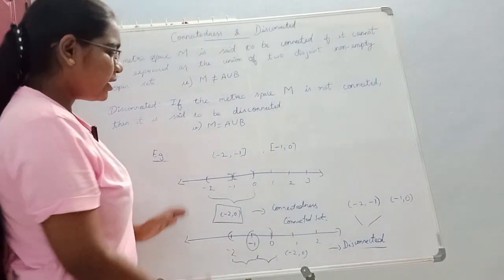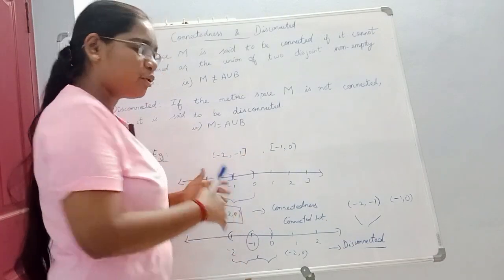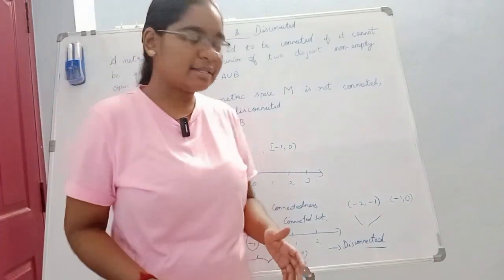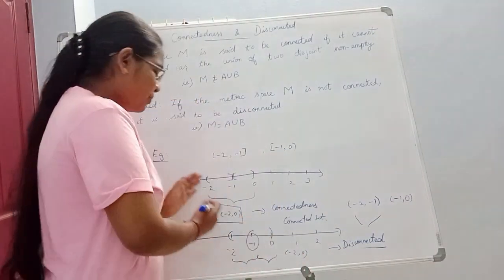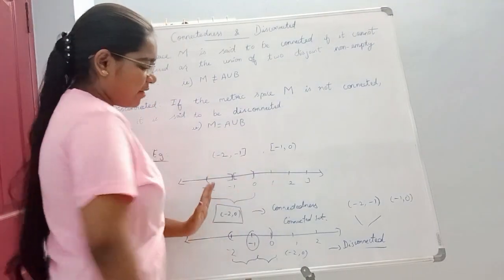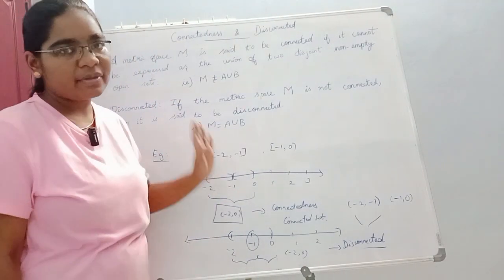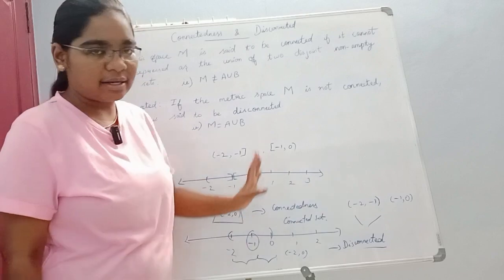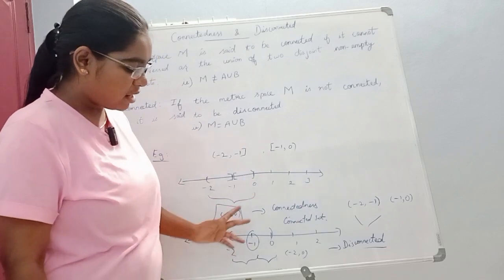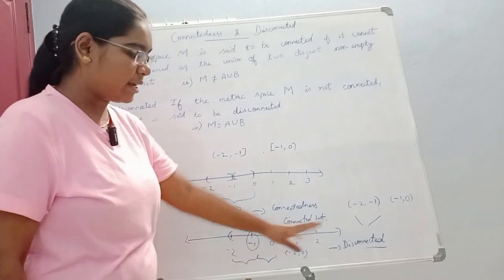Now let's check the two open sets. We need to check whether the two open sets cover the whole part. The whole part will cover itself and disconnect.